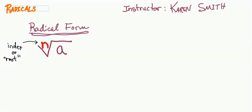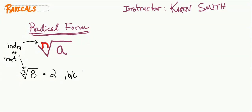For example, when you see the cubed root of eight, this is asking you which number is multiplied times itself three times. So the index is the third root — we say 'cube' for the three, but it's the third root or cubed root. And so this would be two, because two cubed equals eight.